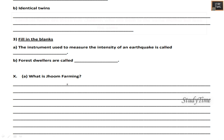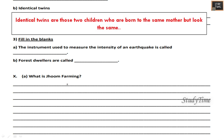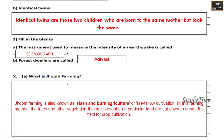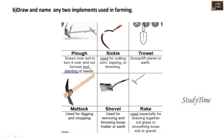Identical twins are born to the same mother but look the same. Fill in the blanks: the instrument used to measure the intensity of an earthquake is called the seismograph. Forest dwellers are called Adivasi. What is Jhoom farming? It is also known as slash and burn agriculture — trees and vegetation on a particular land are cut down to create a field for crop cultivation. Draw and name any two implements used in farming: you can write and draw a sickle, trowel, mattock, shovel, or rig.